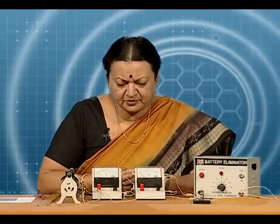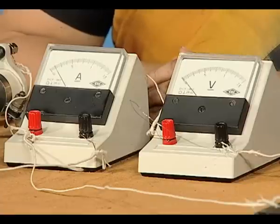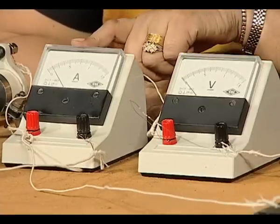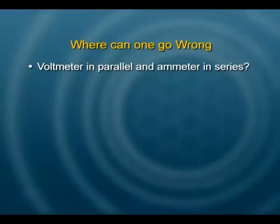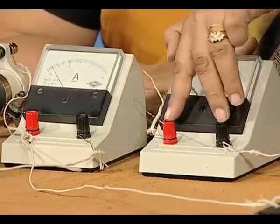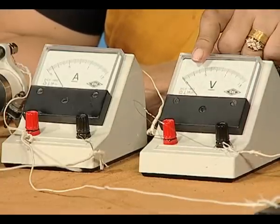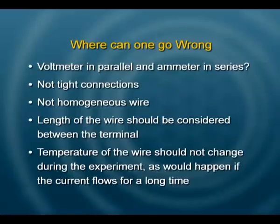Where can we go wrong in this experiment? A common mistake is connecting the ammeter not in series. The ammeter must always be in series so that all the current flows through it, and the voltmeter should always be connected in parallel with the conductor. Also, ensure all connections are tight. You should not let current flow endlessly in the circuit — switch it off when you are not taking readings.